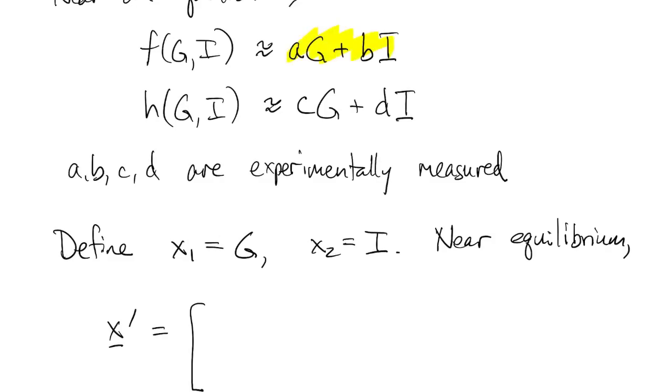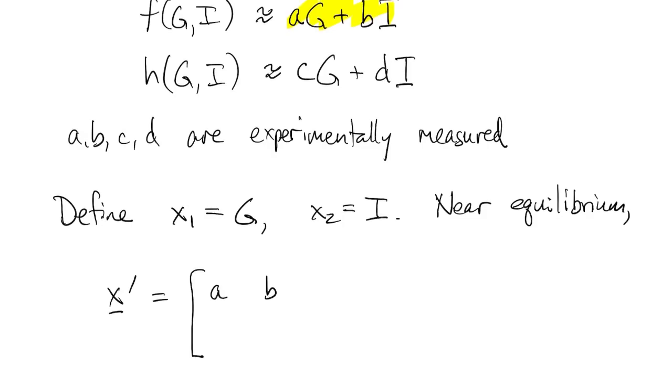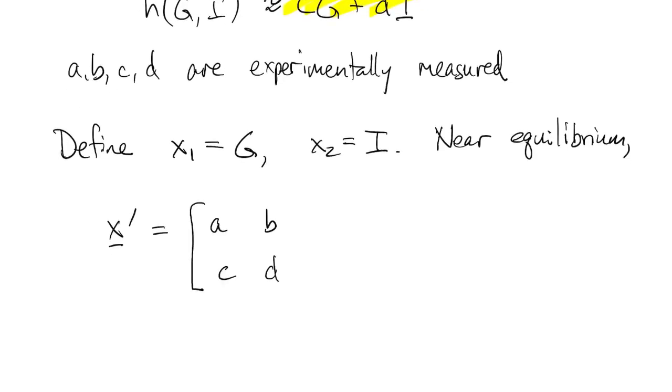So this is the first row of the matrix, ag plus bi, so that's the row ab. And then h gives us the second row of the matrix, c and d. All that's times x itself, plus the external forcing.